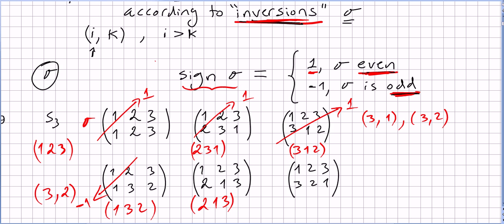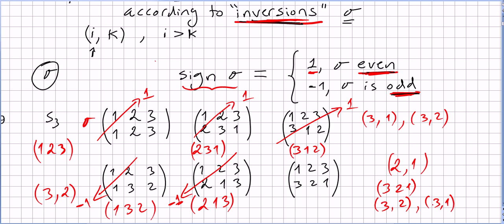What about two one three? The only inversion is the pair two before one, since one has no smaller element to its right. So we have an odd number of inversions and the sign of this permutation is minus one. And the last one: three two one. We have the pairs three two, three one, and two one — three inversions. An odd number of inversions, so the sign of this permutation is minus one. We are going to use this in future videos when we introduce different concepts around determinants.